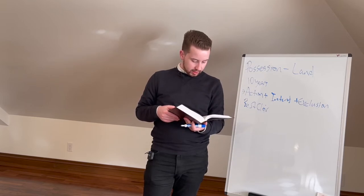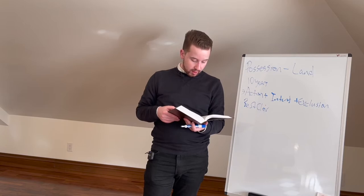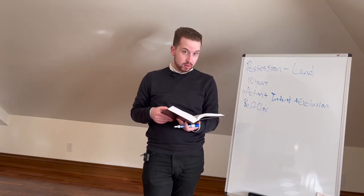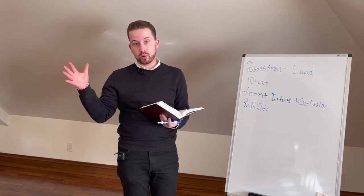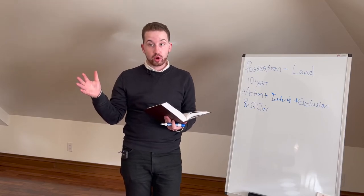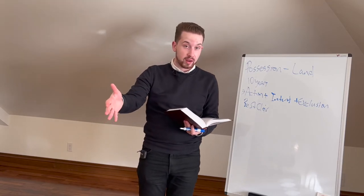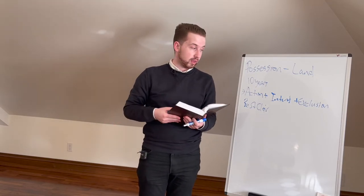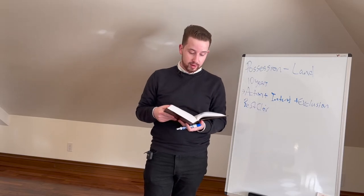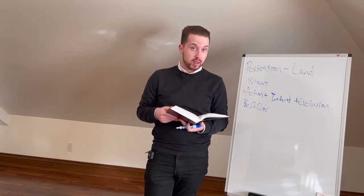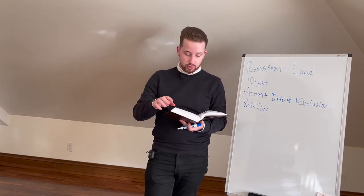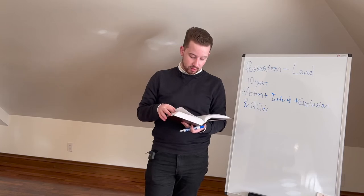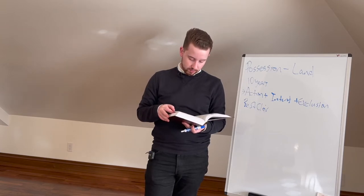There are also issues regarding co-owners. You can exclude a co-owner because they are an owner. So if the other co-owners start excluding that person from their land and meet the requisite criteria, that's sufficient and they can acquire the balance of ownership vested in that person.